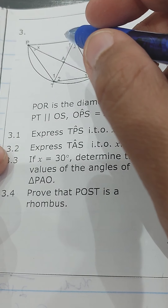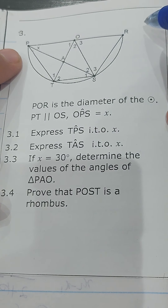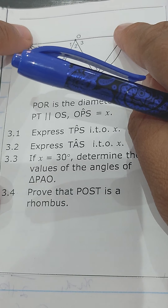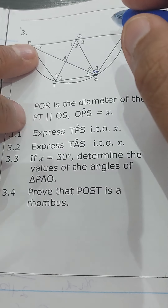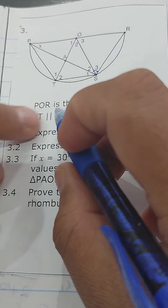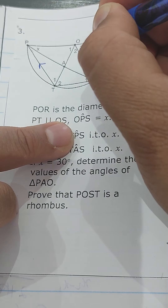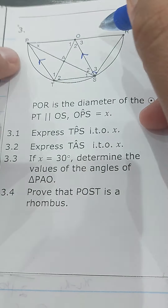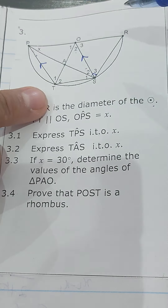Now we're looking at number 3. In number 3 we are told that POR is a diameter, so angle S2 and S3 is 90 degrees — angle in a semicircle. The angle at center is twice the angle at circumference, which will come into play. PT is parallel to OS, so this angle here equals that angle — alternate angles — and O2 is also equal to angle T1.